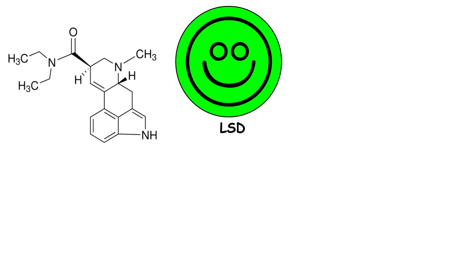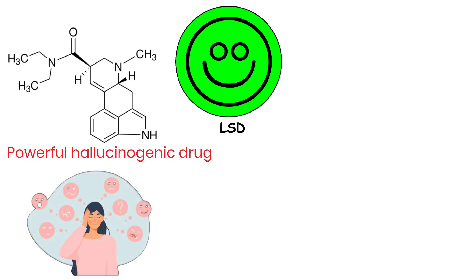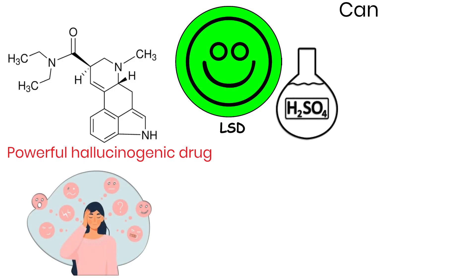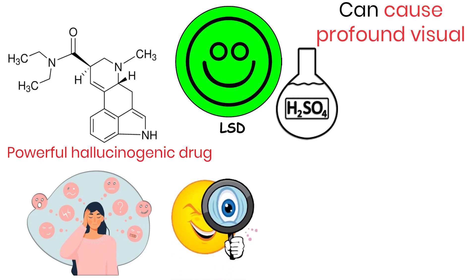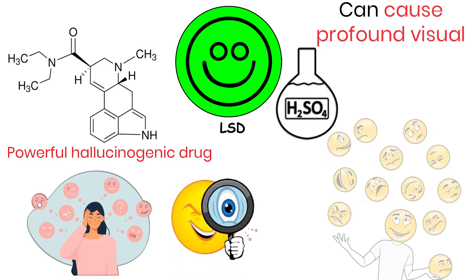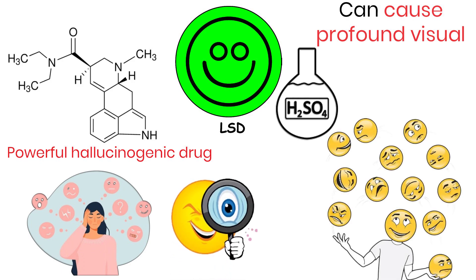LSD, or lysergic acid diethylamide, is a powerful hallucinogenic drug that alters perception and mood. It is commonly known as acid and can cause profound visual and auditory hallucinations, as well as shifts in consciousness and mood.